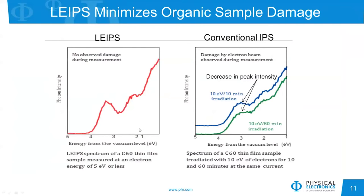Here we have examples of the damage that can occur on an organic material with LIPS versus conventional IPS. In the LIPS experiment — a one to two hour experiment on a C60 thin film — you see normal photon emission from the material, with a peak at roughly a little bit less than 3 eV. Whereas with conventional IPS at 10 eV, that same peak is greatly reduced in intensity after only 10 minutes of irradiation, and even further reduced after an hour. So you can easily see that LIPS is much more gentle on organic materials than the conventional technique.